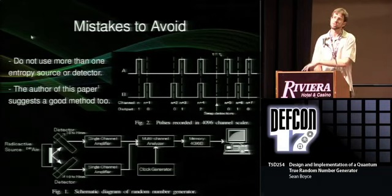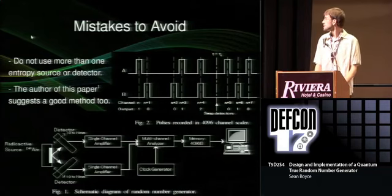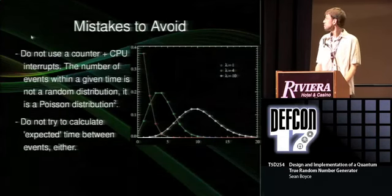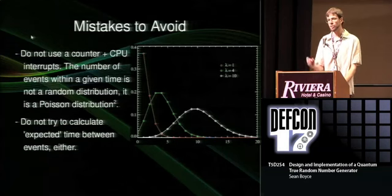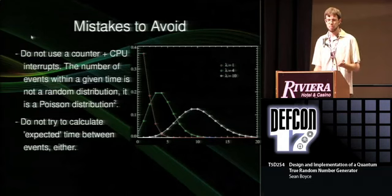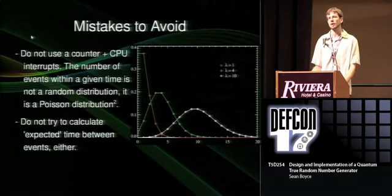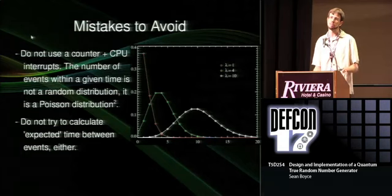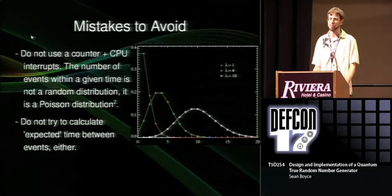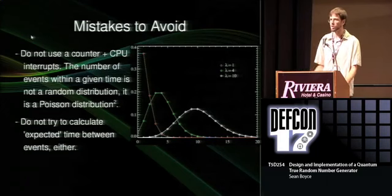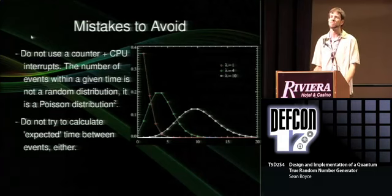The person who came up with this method also described the correct method — that paper was very nice. The second mistake, which is probably worse, is to use a counter on some microcontroller or computer and then use a particle detector as a CPU interrupt, outputting whatever number the counter is at. The problem is that when dealing with particle detection statistics, the time between detections is defined not by a random distribution but by a Poisson distribution. This means there's some average value of time between detection events which is more likely than others — so the numbers you output are defined by a Poisson distribution, which is very bad.